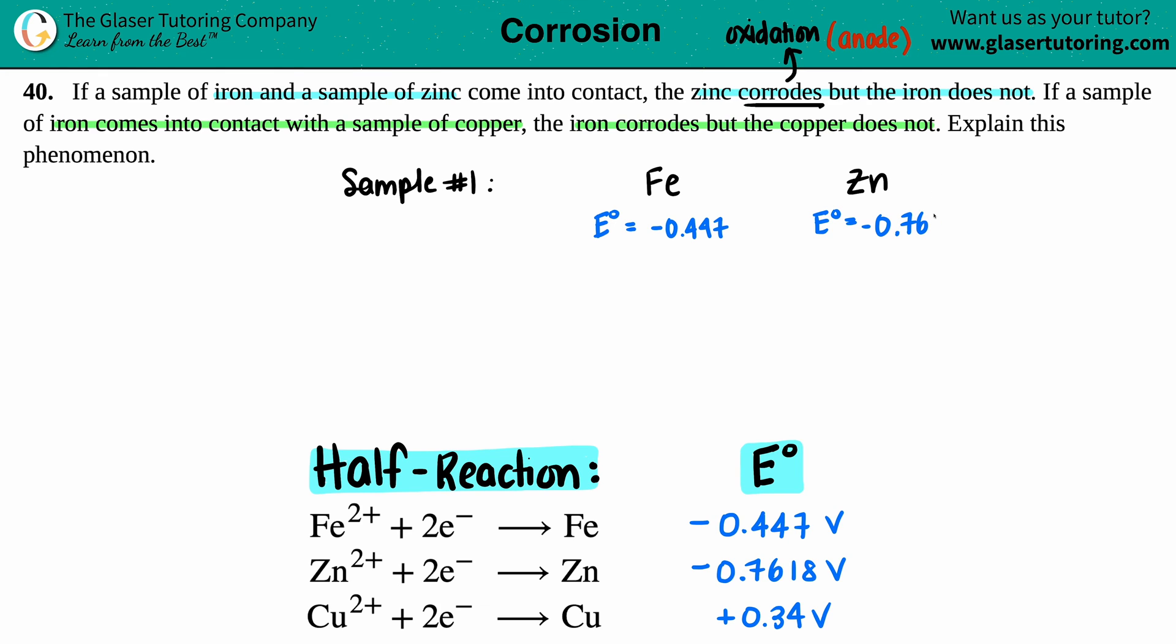So now the thing here is which one is going to corrode? Well, generally speaking, remember that the lower number you have from your standard half-reaction values, the more likely it's going to oxidize or undergo oxidation.